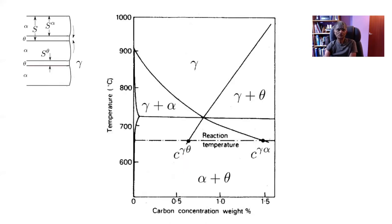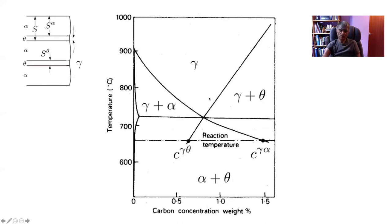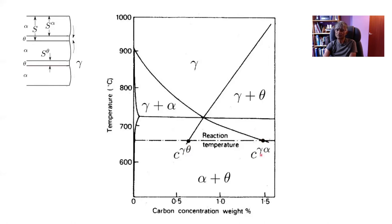To treat the growth rate, we need the composition in the austenite in contact with ferrite and the composition in the austenite in contact with cementite, as defined by the phase boundaries. These two boundaries give the chemical compositions that create a gradient driving diffusion. The composition in the austenite in contact with cementite is smaller than in contact with ferrite, providing a composition gradient — or equivalently a free energy gradient — that drives the diffusion.